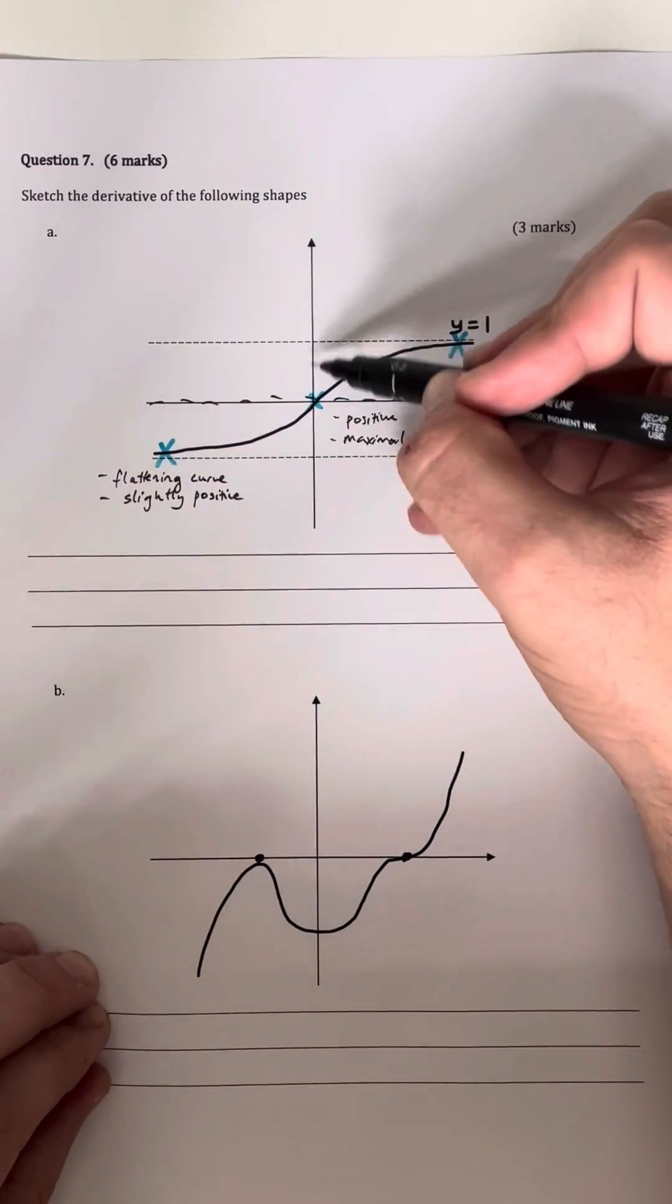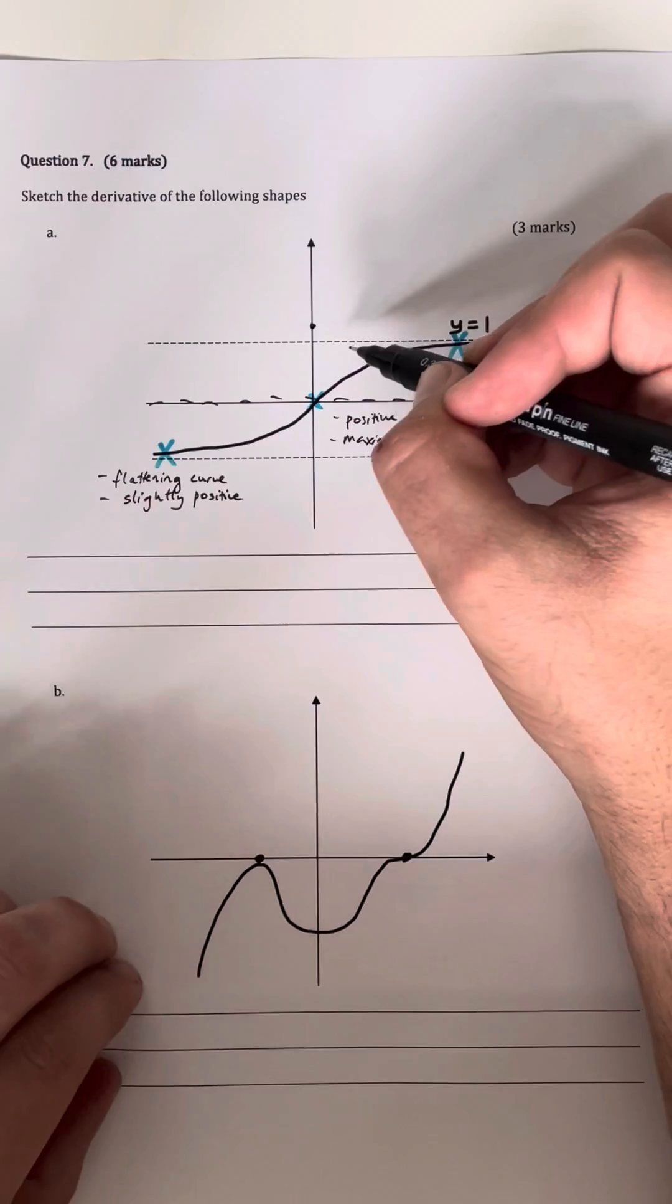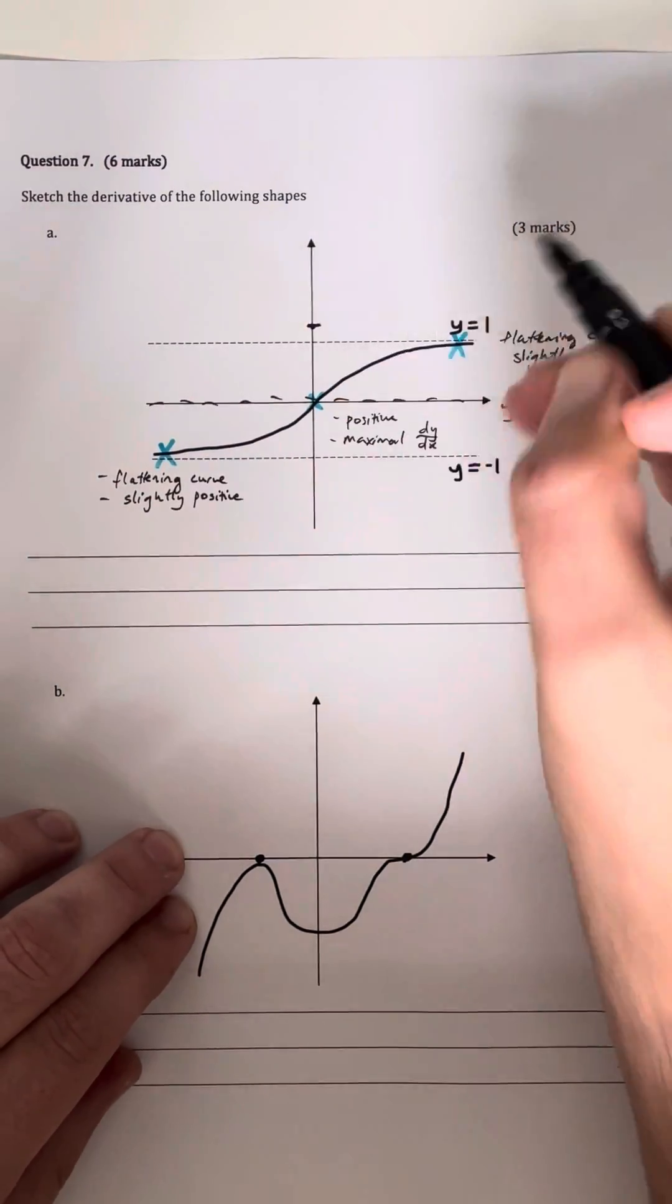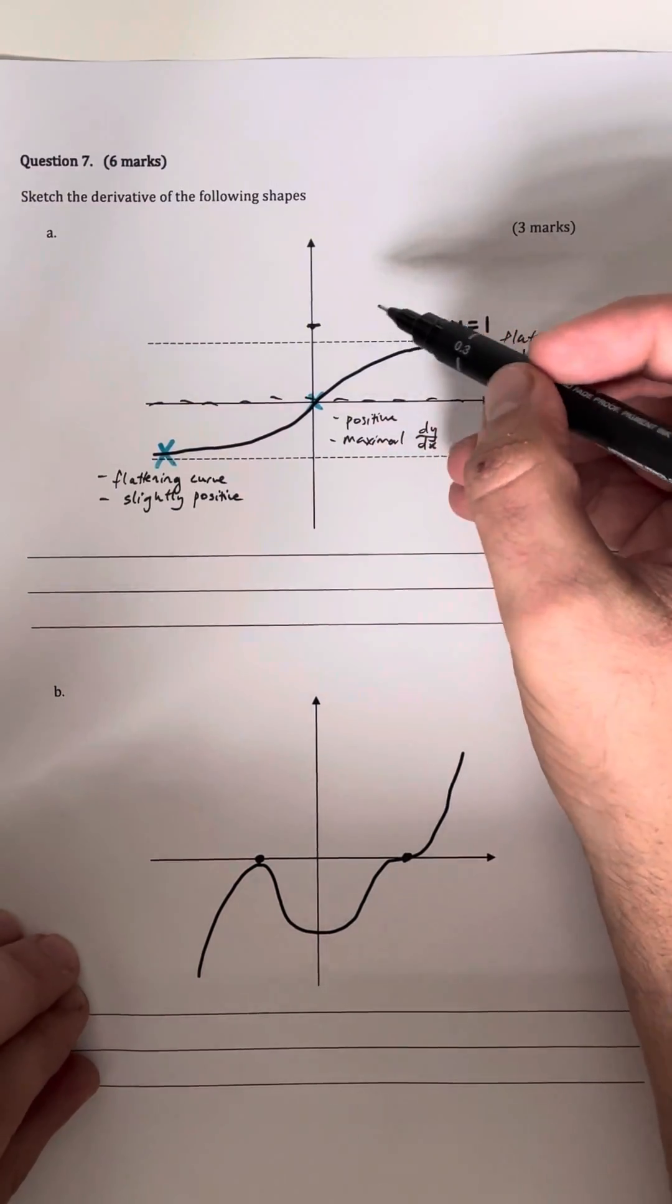And our peak can be anywhere because this is just a rough sketch, so I'm just going to put the peak roughly here and we're going to have a bit of a bell curve shape. So we're going to have a maximum at this coordinate here, it doesn't matter what it is, you don't have to put any coordinates.